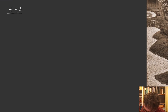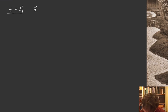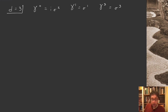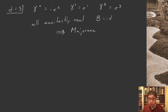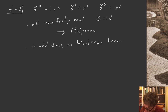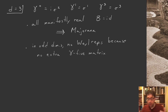In d=3, we use the γ₅ matrix of d=2 as the additional gamma matrix. So we have γ⁰ = iσ₂, γ¹ = σ₁, and γ² = σ₃, all of which are manifestly real. So we can again let B be the identity and impose a Majorana condition on three-dimensional spinors. However, in odd dimensions there are no Weyl representations, since we've used up the γ₅ matrix. So in d=3, we have a two-complex-dimensional Dirac representation, or we can impose the Majorana condition to get a two-real-dimensional Majorana representation.